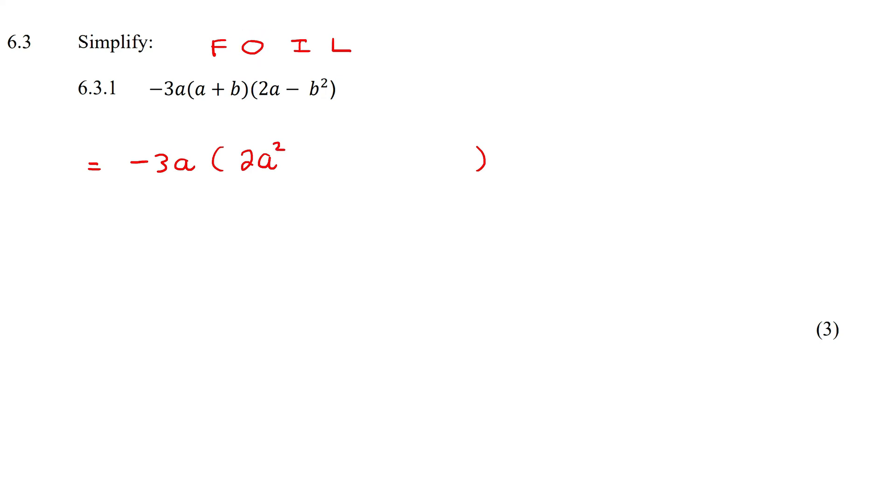Then we do the O, which stands for outside. So it's the outside one in this one and the outside one in that one. What do we mean by the outside? It means the two on the outer edge.